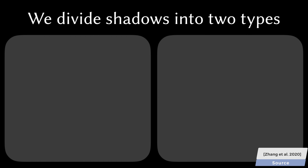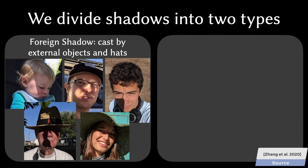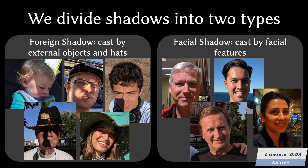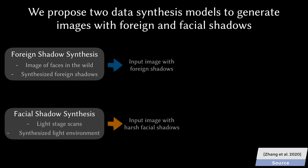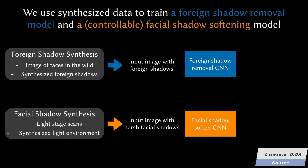One, there are shadows cast on us by external objects — let's call them foreign shadows — and there is self-shadowing, which comes from the model's own facial features. Let's call those facial shadows. So why divide them into two classes? Simple: because we typically seek to remove foreign shadows and edit facial shadows.